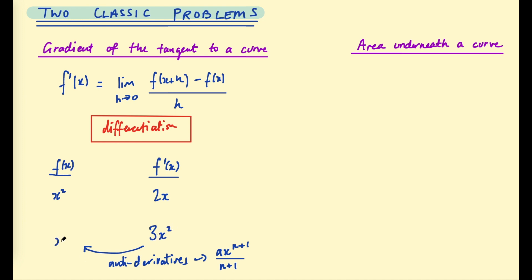...we end up with x cubed. We also have to add on a constant — we usually write plus c, c for constant. The reason is that x cubed plus 2, x cubed plus 10, and x cubed minus pi all have the same derivative, because the derivative of a constant is 0. So we need to account for that when going backwards by adding a constant. We'll look at that in more detail in following videos.